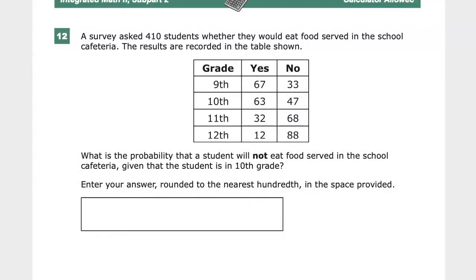The question says, and this is a calculator section, a survey asked 410 students whether they would eat food served in the school cafeteria. The results are recorded in the table shown below. What is the probability that a student will not eat food served in the school cafeteria given that the student is in 10th grade? Enter your answer rounded to the nearest hundredth in the space provided.